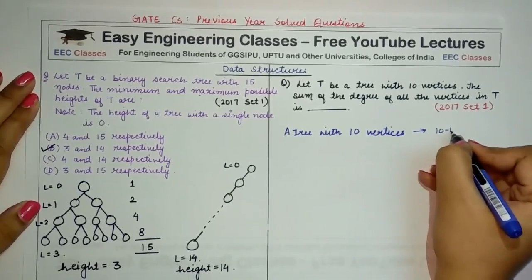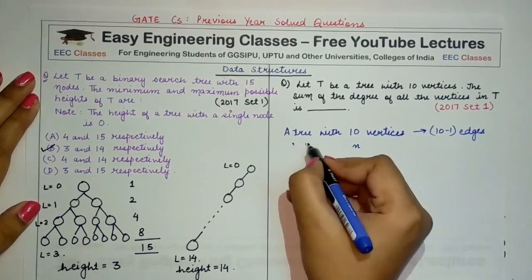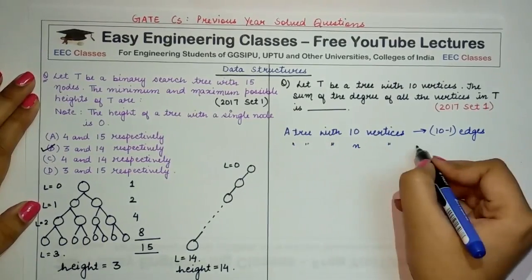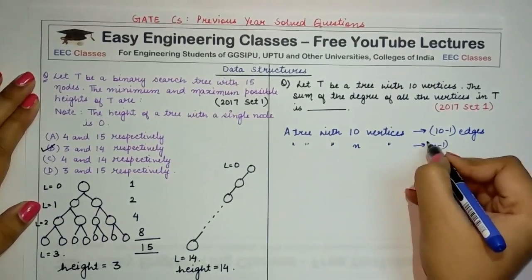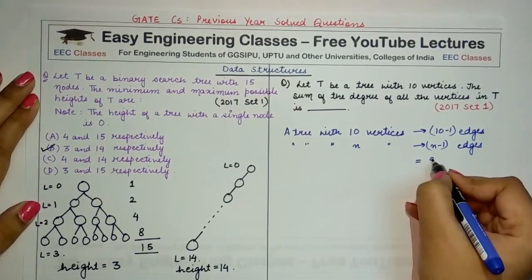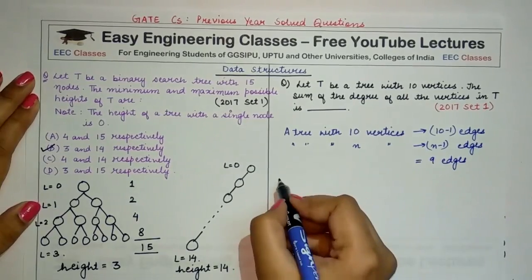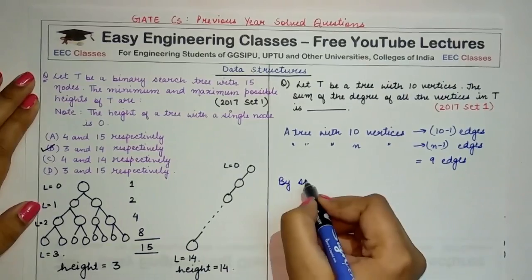10 minus 1 edges, because there is a theorem: a tree with n vertices has n minus 1 edges. So it would have 9 edges. Now from our theorem of sum of degree of vertices...